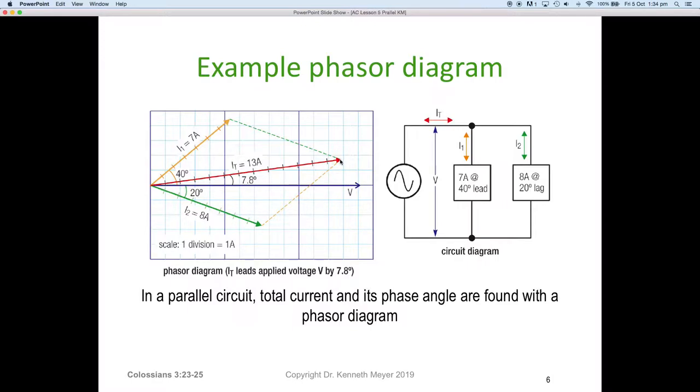That point represents the I total. Remembering of course, you've got to project backwards to the origin. The length of the red phasor is the total current. Its distance from the horizontal, either positive or negative. In this particular case, it's positive angle, therefore it's a lead. We end up with a total current of 13 amps scaled off the phasor diagram. And we've measured 7.8 degrees. For our phasor diagram, I total leads the supply voltage by 7.8 degrees at 13 amps.